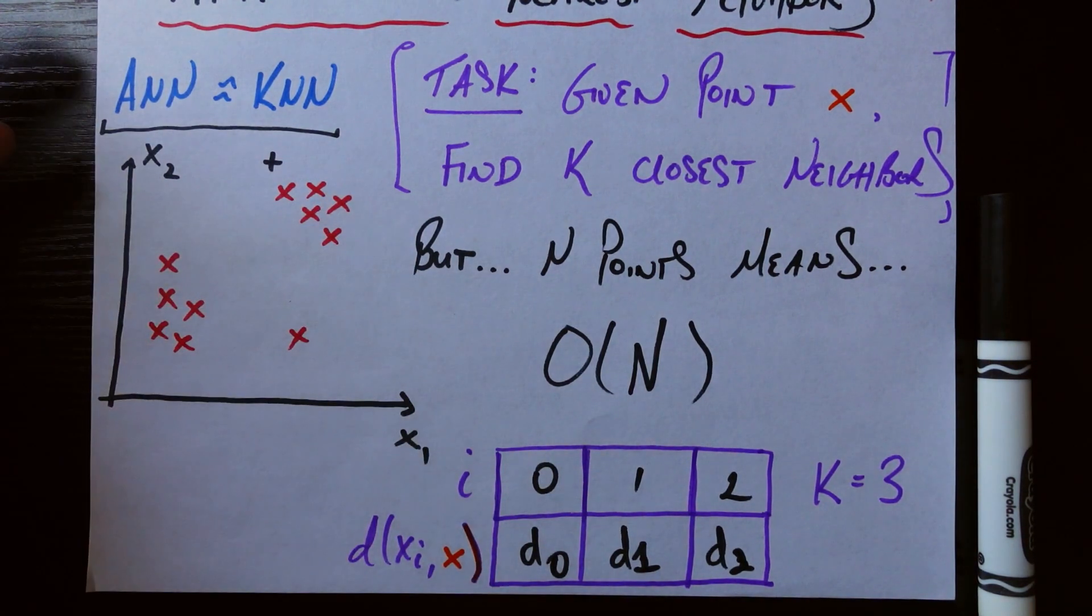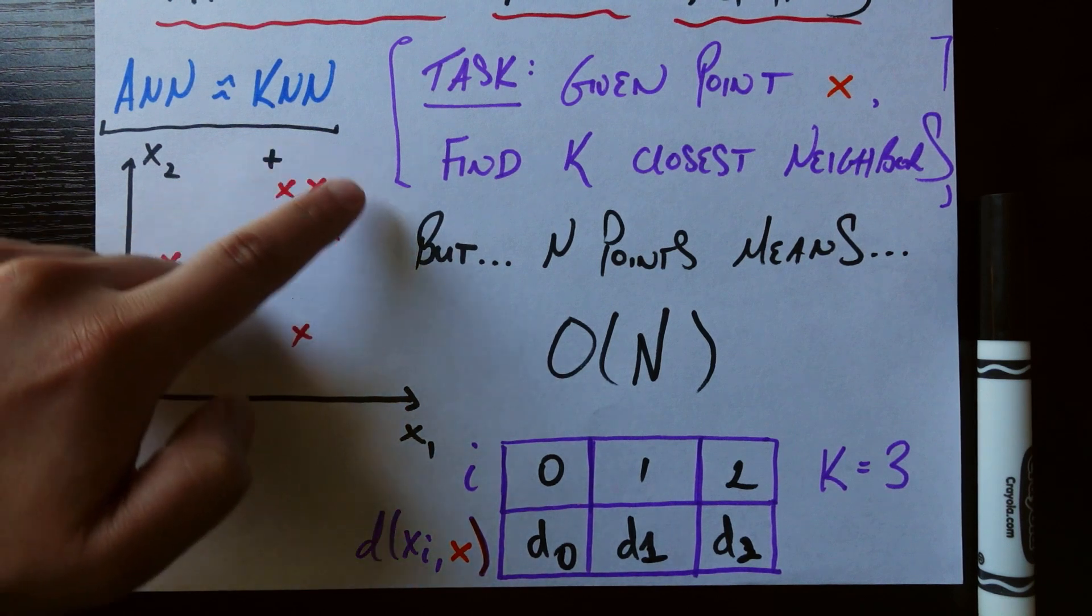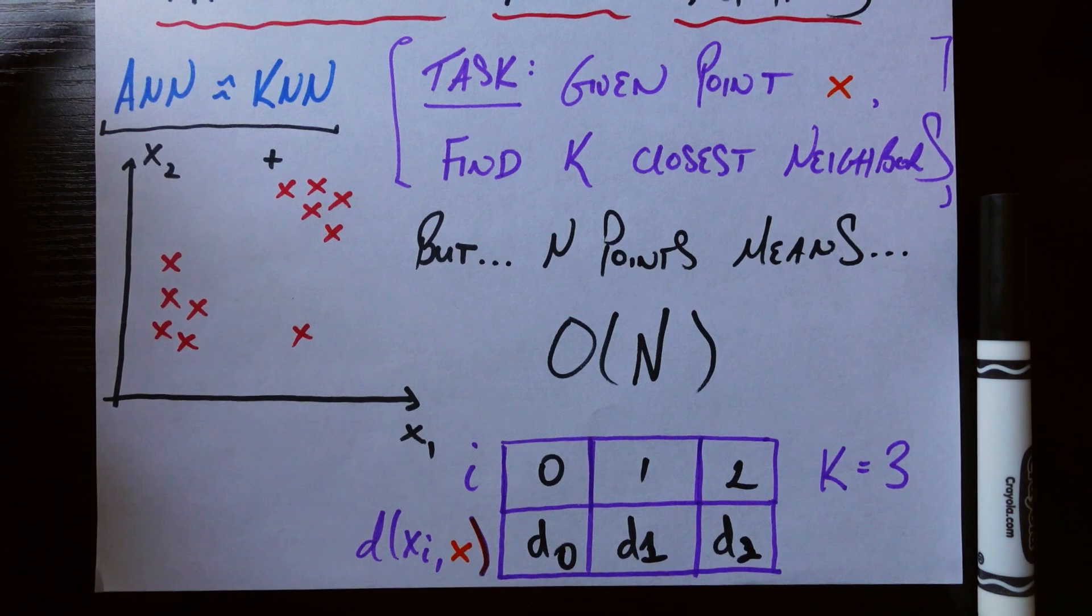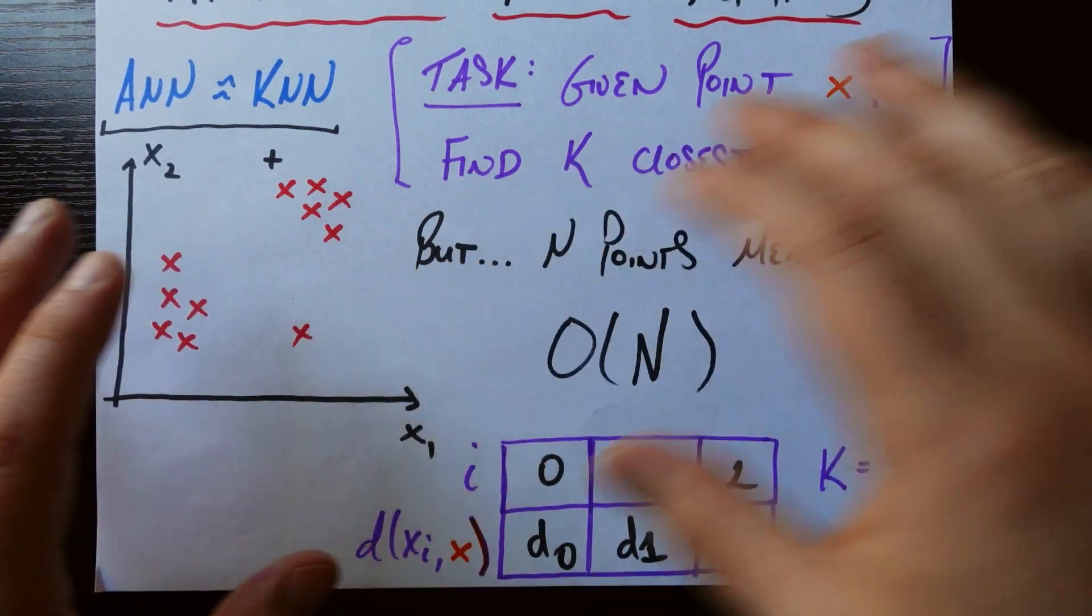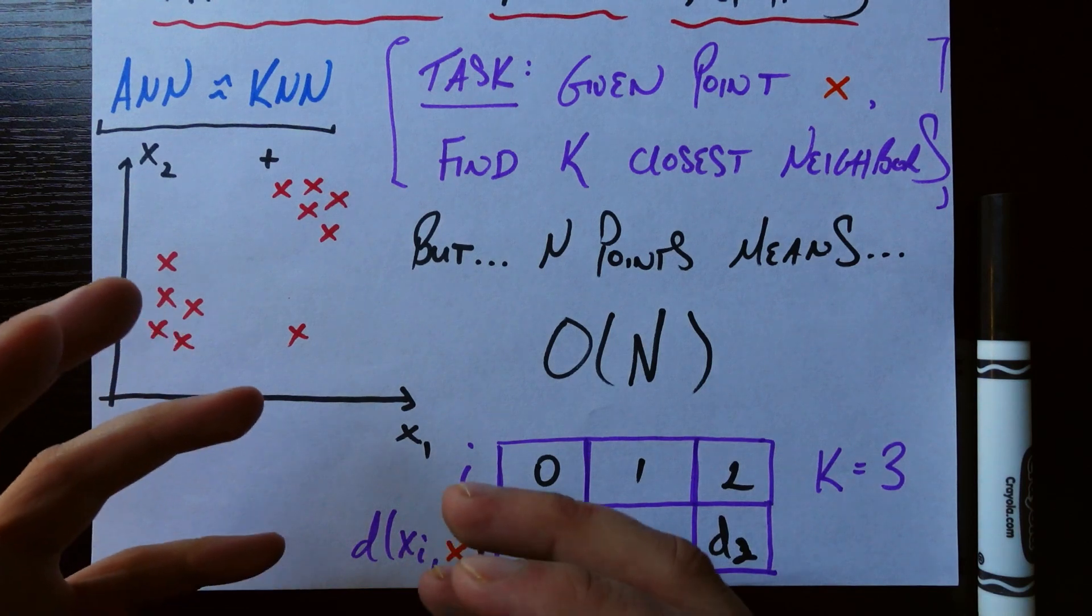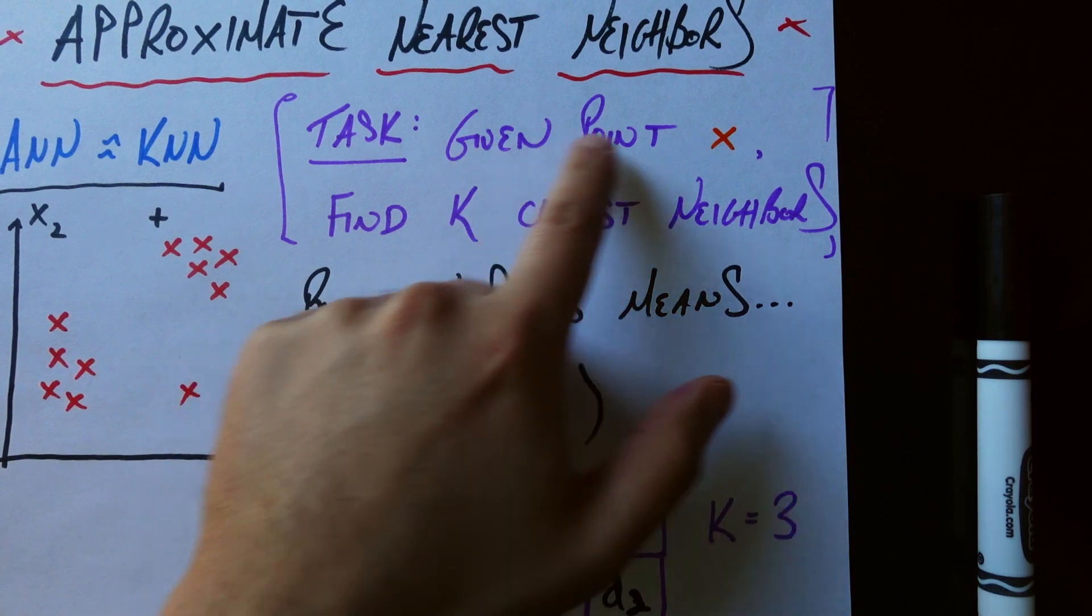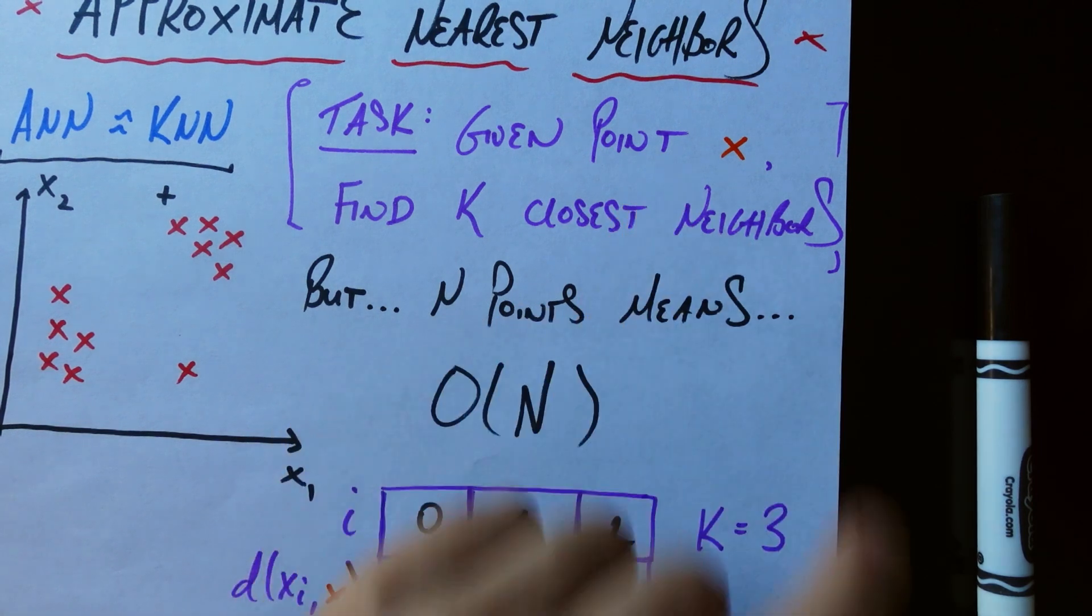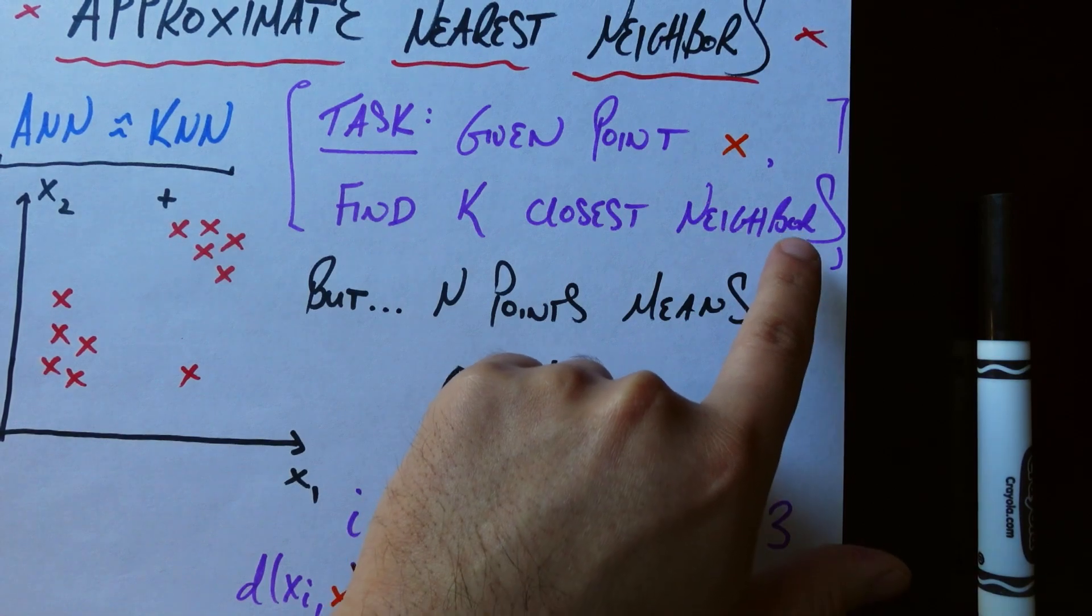And from there you can do various things. If you're using k-nearest neighbor for classification, then you might predict the label of this mystery point as the majority label of your three closest neighbors. If you're using this for some kind of natural language processing, then each of these points might represent a word, so you might be embedding your words as points in space. And if a new word comes along, you might care about who are the three words that are closest, most similar to me. So lots of applications, but the main point that you're always trying to do is that given some point x, so this x is now a variable, not the same as these symbolic x's here, so given some new point x, you want to search your training data to find the k-closest neighbors to that point x.